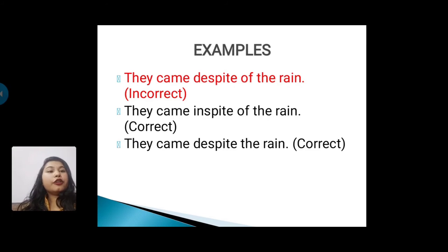They came despite of the rain. Now, despite of the rain - we should use despite alone, or in spite of together. Okay. So, despite of is incorrect. The correct forms are: They came in spite of the rain, or they came despite the rain.